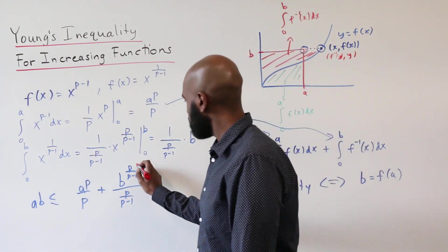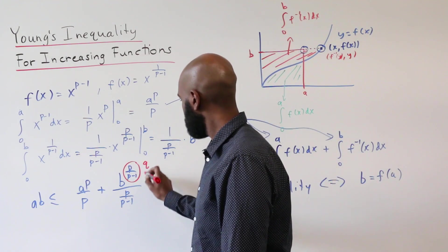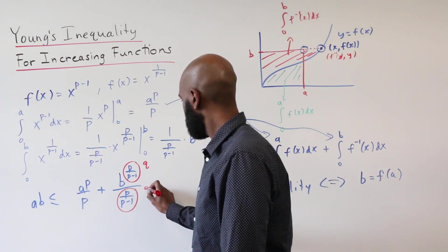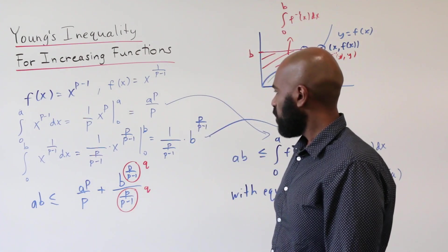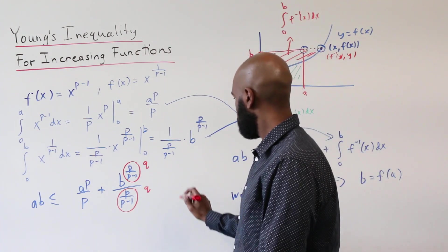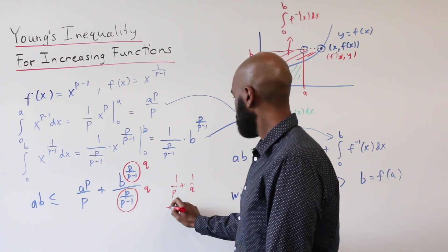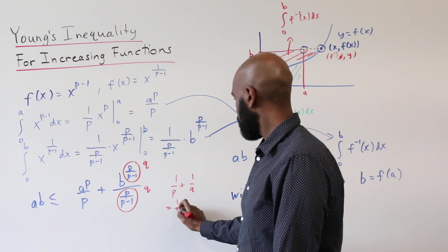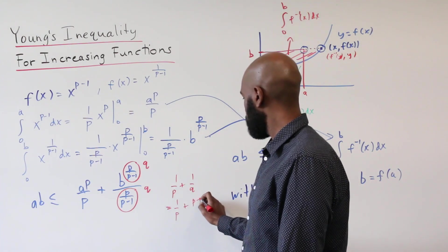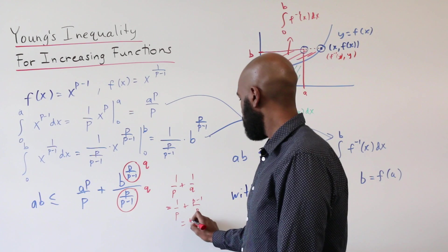So let's let this thing be q. Let me notice that 1 over p plus 1 over q is 1 over p plus p minus 1 over p, which is 1.